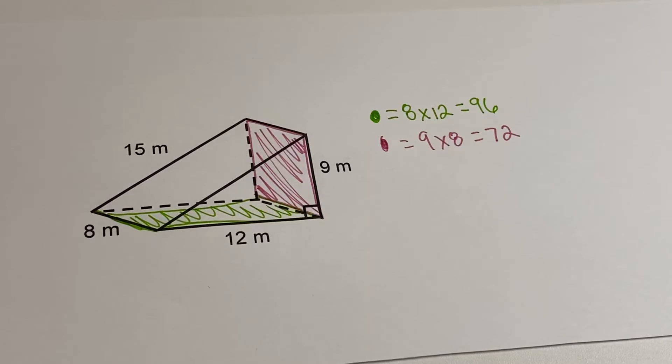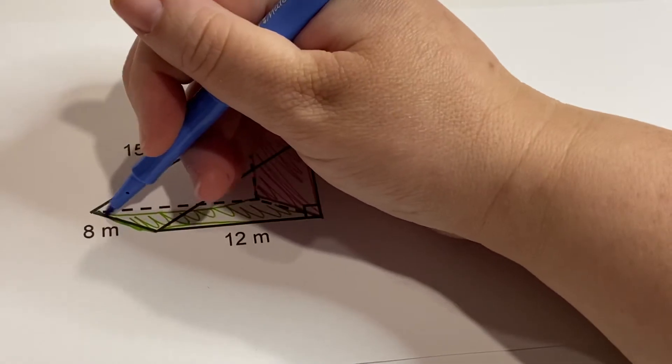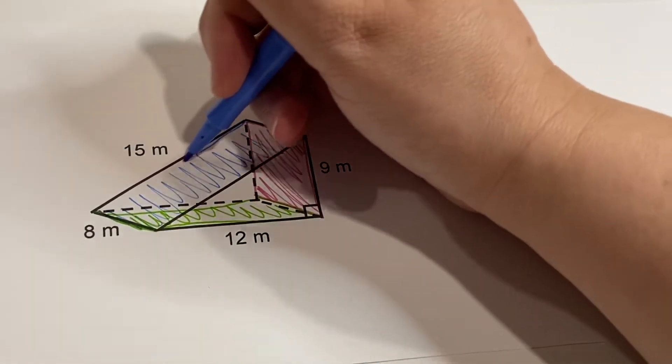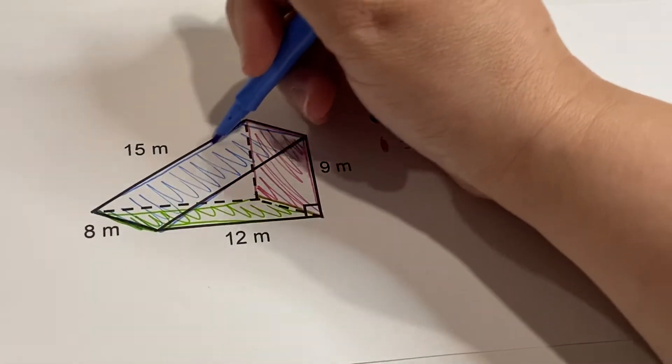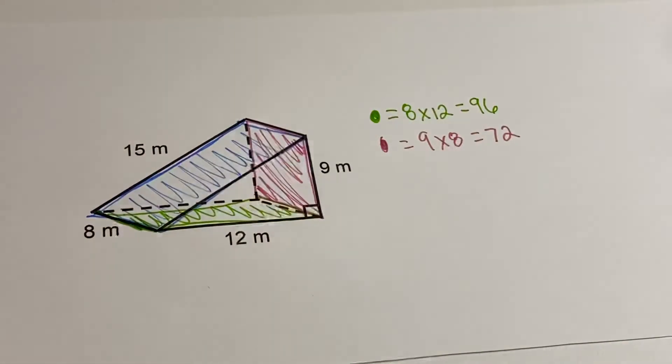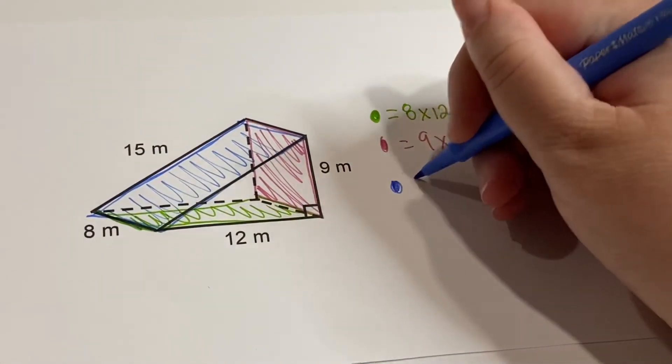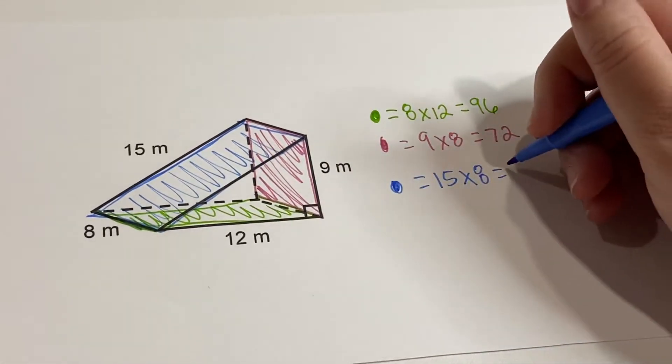Okay, and let's do our other rectangle before we move to the triangles. It is this one on the top. We can see which lines we have: a 15 and an 8. When you actually trace them like that, you can see that it's this 15 and the 8. So it's going to be 15 times 8, which equals 120.